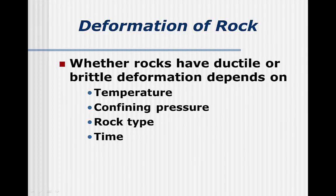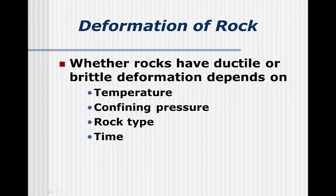Whether a rock undergoes ductile versus brittle deformation depends on four variables. Temperature might be the most obvious. At high temperatures, objects are more likely to bend. As a result, rocks deep in the earth are more likely to experience ductile deformation than rocks near the surface. Increased confining pressure and longer time over which the stress is applied also tend to lead to ductile deformation.